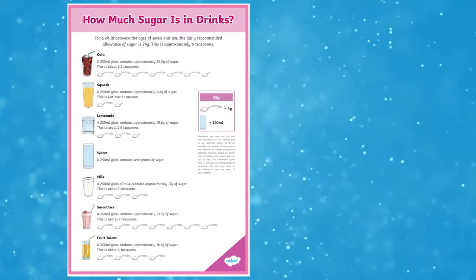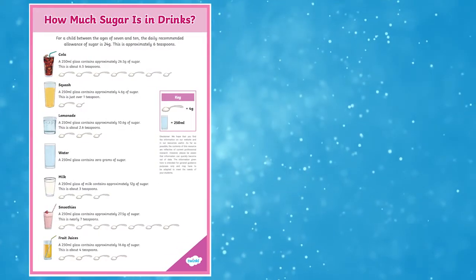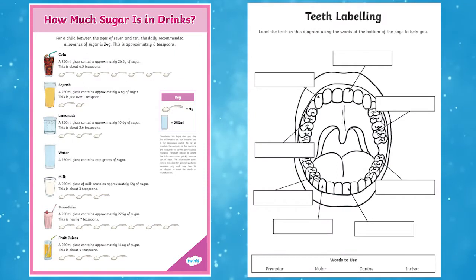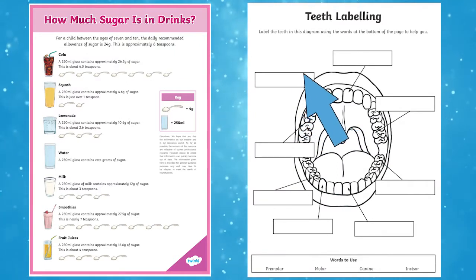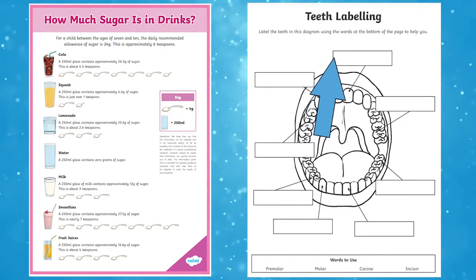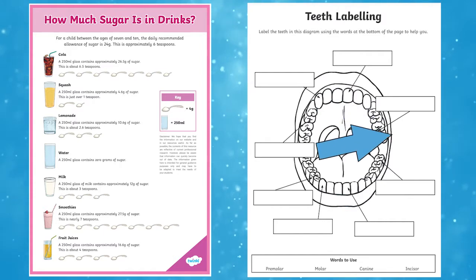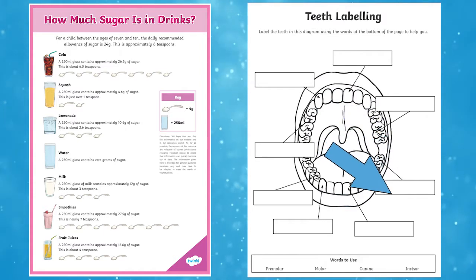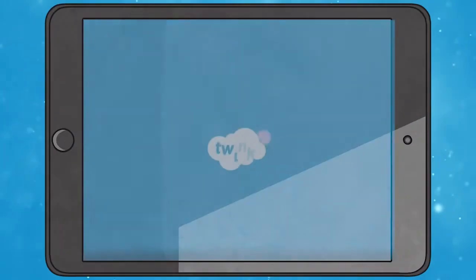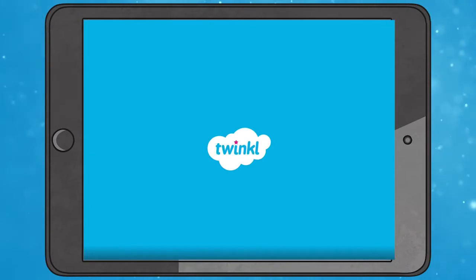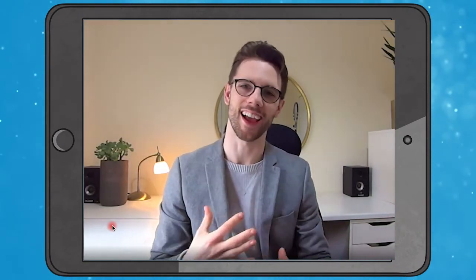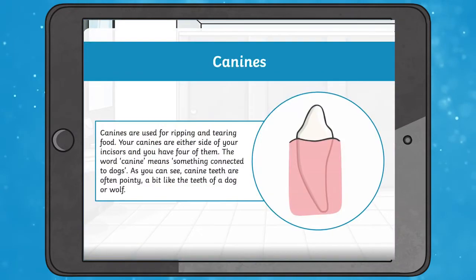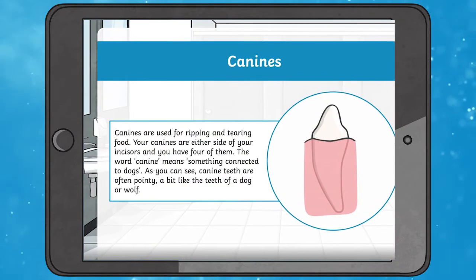You can also use our How Much Sugar Is In Drinks display poster alongside your teaching of teeth. This fun activity sheet involves your children identifying and labelling the different types of teeth on an illustration of the human mouth. Why not check out this amazing lesson by Twinkle teacher Arthur, where he takes children through the different types of teeth and their purpose, before exploring and labelling a cross section of a tooth.